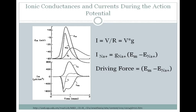We can look at the different ionic conductances and currents that happen during the time of an action potential. If you look at the conductance of sodium over time, you'll see that conductance peaks early during the action potential, during the rising phase, and then falls during the falling phase. Whereas potassium conductance peaks later, during the falling phase of the action potential — that's consistent with everything we've seen before.